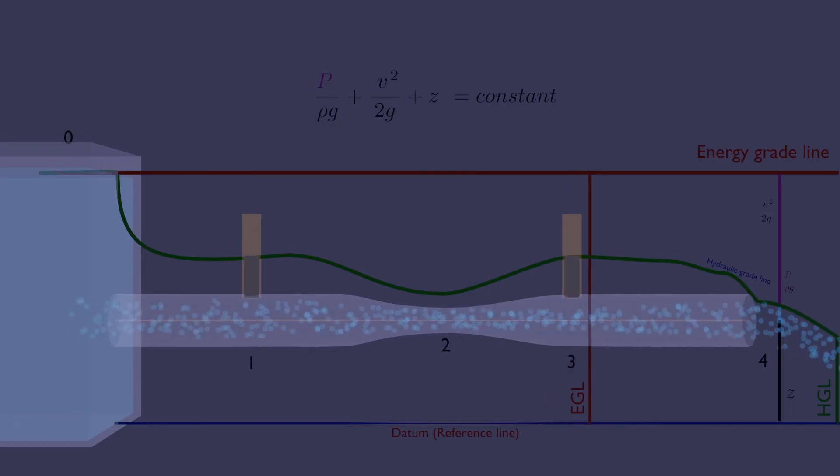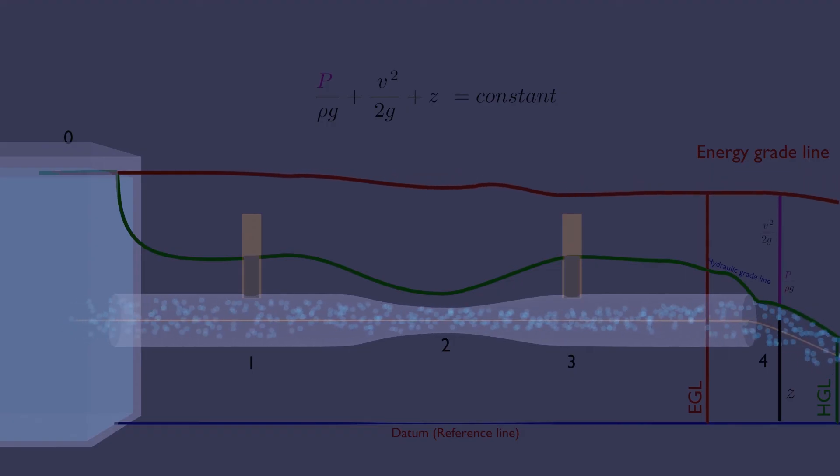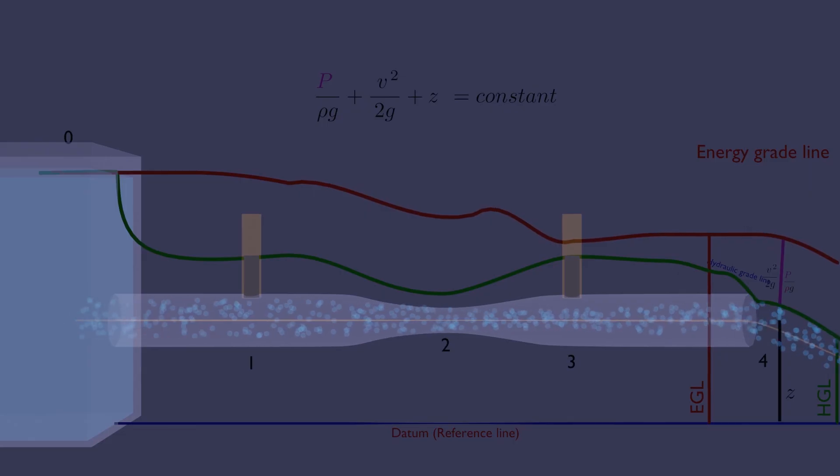However, EGL is still higher than HGL by the amount of velocity head. Remember, in real life there is always friction and heat, which decreases the total energy of the fluid, so EGL will never be horizontal. Please subscribe for more fluid mechanics. Thanks.